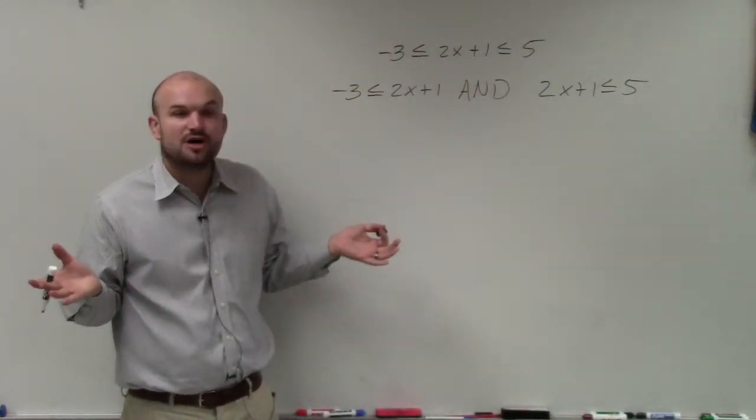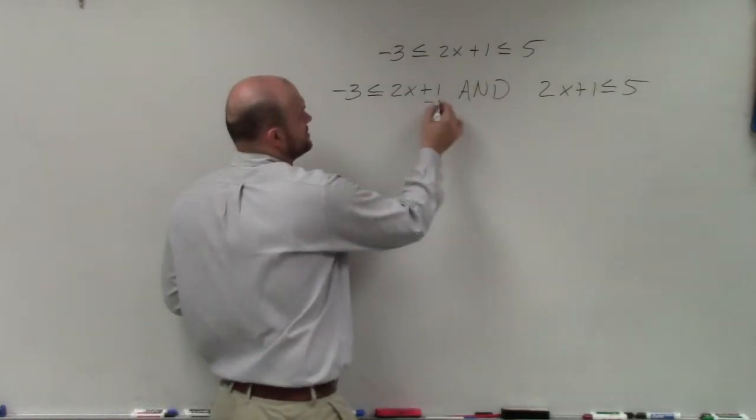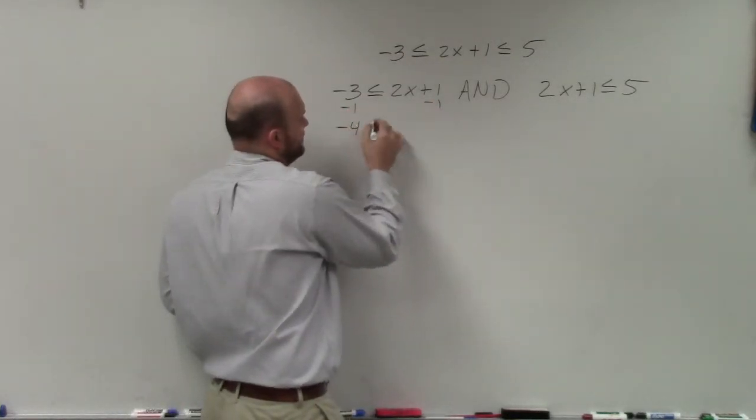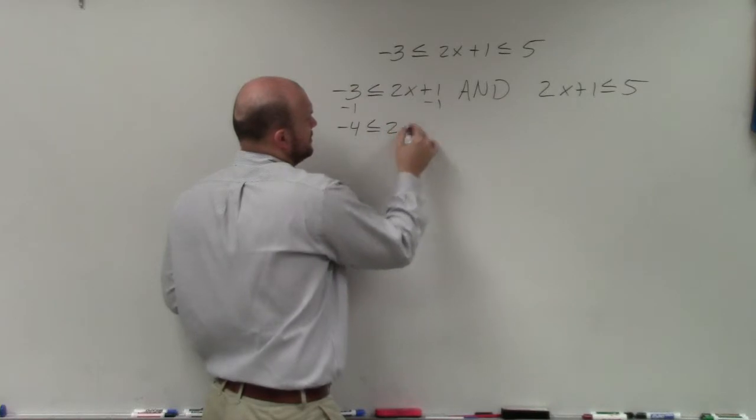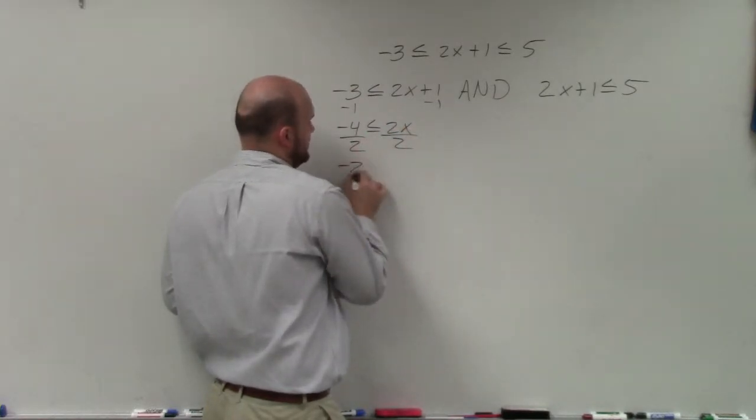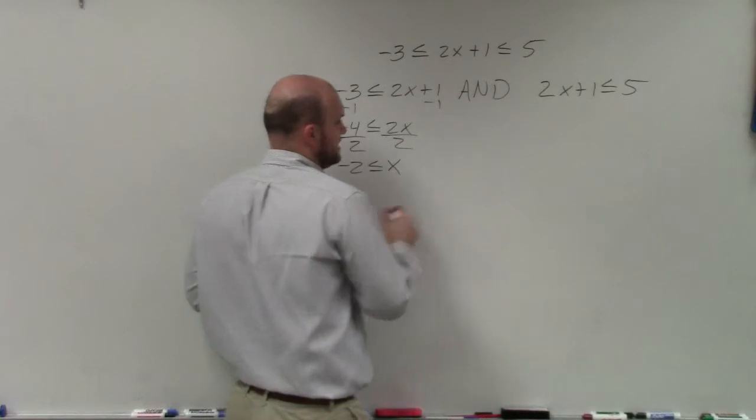So I'd subtract 1, subtract 1. So I have negative 4 is less than or equal to 2x, divide by 2, divide by 2. Negative 2 is less than or equal to x.